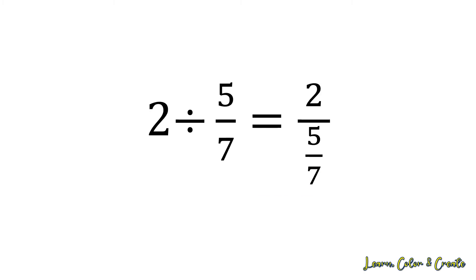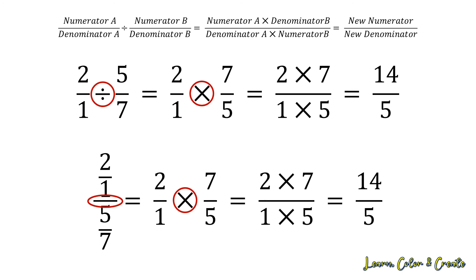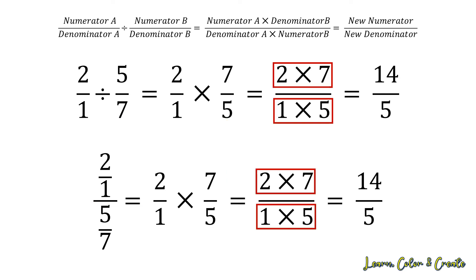Our next example is the whole number two divided by five-sevenths. We first convert the integer two to a fraction by dividing by one, giving us two over one. Then we keep the first fraction, change division to multiplication, and flip five-sevenths to seven-fifths. Multiplying the numerators: two times seven gives 14. Multiplying the denominators: one times five gives five, for a final answer of 14 over five.